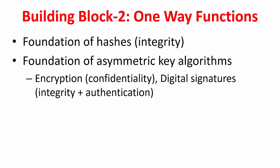The second building block extensively used in cryptography is one-way functions. These form the foundation of hashes, which provide message integrity. They are also the foundation of asymmetric key algorithms, which provide confidentiality, integrity, and authentication. This confidentiality is referred to as encryption, while the integrity and authentication provided by asymmetric key algorithms are called digital signatures. MACs also provide integrity and authentication but are based on symmetric key algorithms.